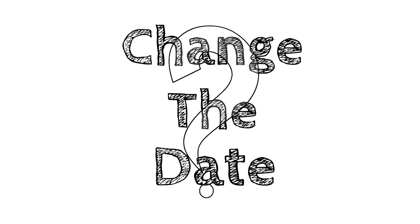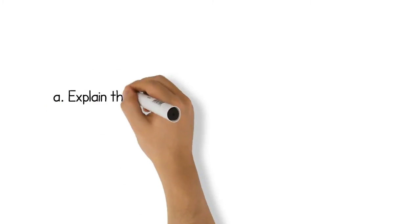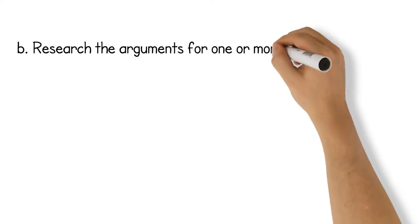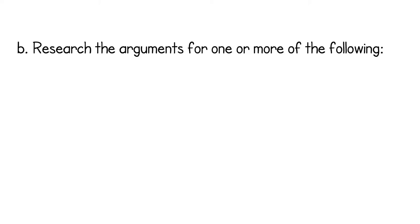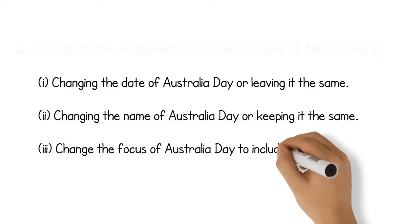Welcome to this short tutorial where we will go through some of the steps you will need to take in order to complete your Change the Date assignment. This assignment asks you to perform a number of tasks. Firstly, in part A you are asked to explain the significance and history of Australia Day. Then in part B you are given three arguments and you are asked to research one or more of them.